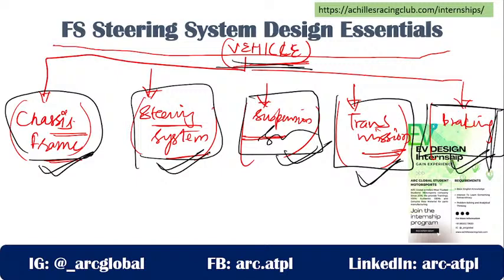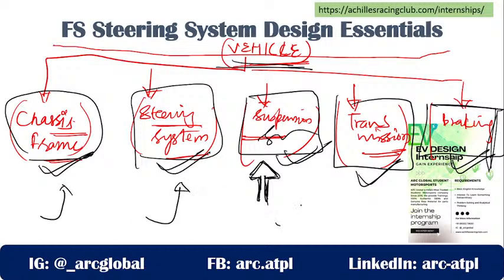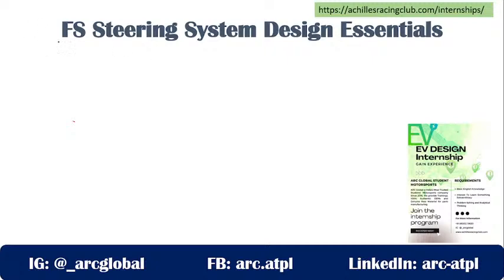Some of you may have the doubt: I have seen many vehicles which do not have a suspension system, so how is this statement correct? Please remember - if you do not find shockers or springs in your vehicle, it does not mean it does not have a suspension system. Your tires and chassis frame structure both also act as the suspension system. We covered the basic definitions of each subsystem in the last session.